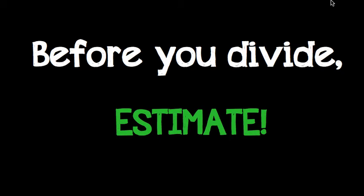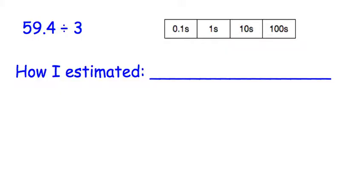In this video, we are going to talk about estimating before we divide with decimals. Estimating involves rounding. So what we're going to do is round these two numbers in a division problem to friendly numbers that are easily divisible by each other.